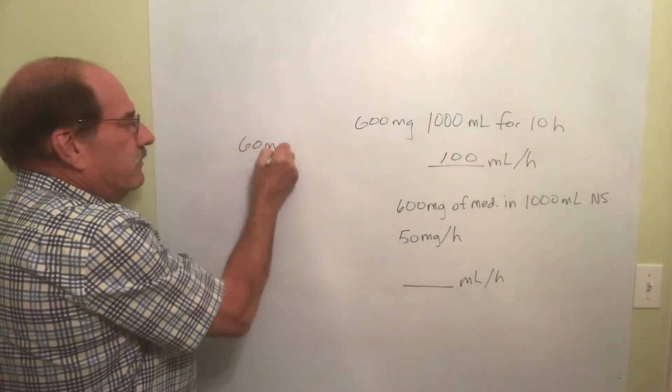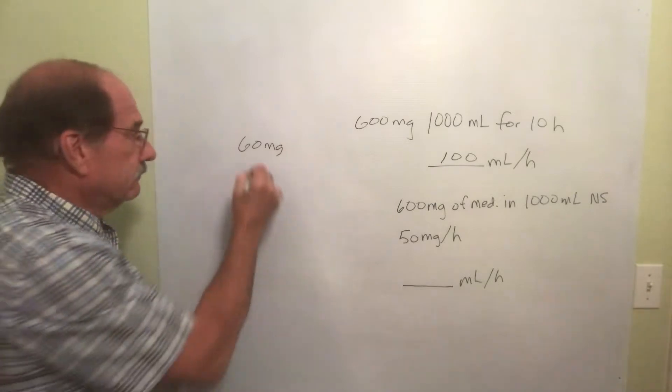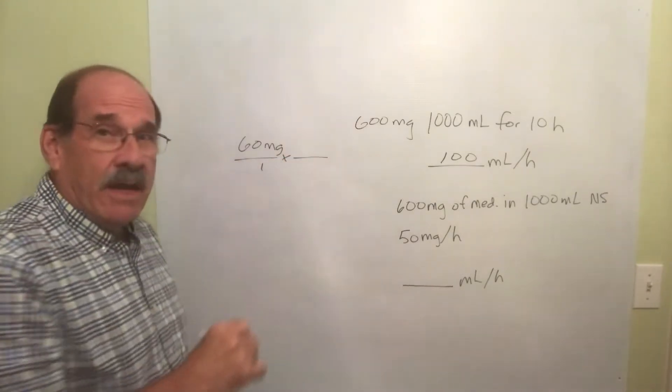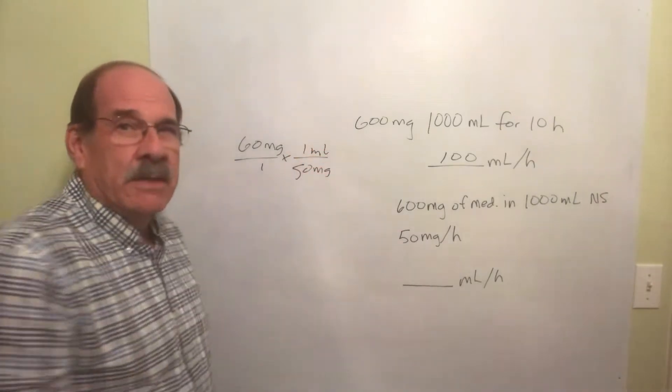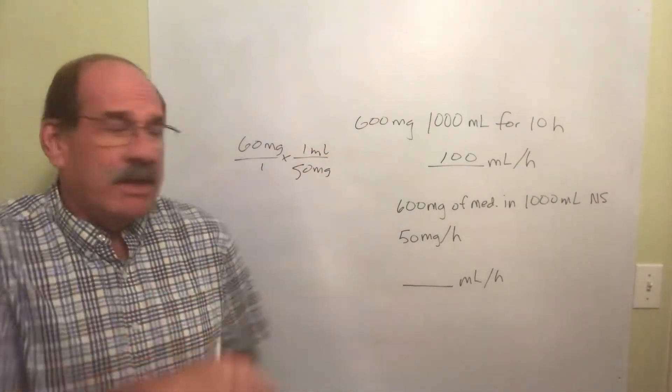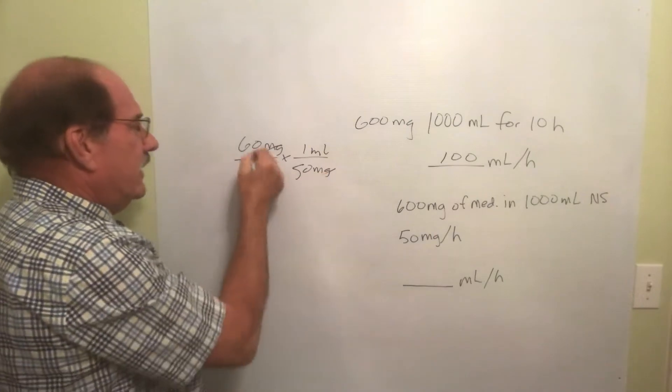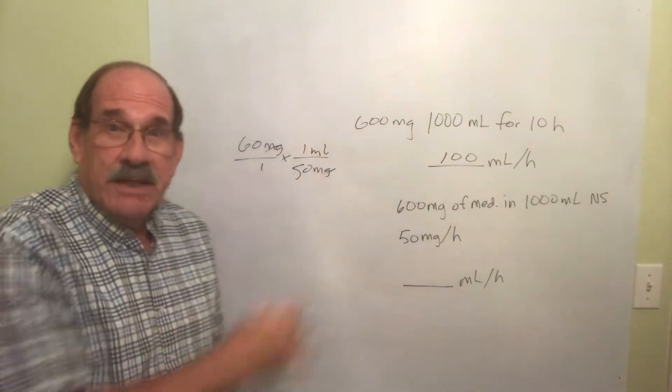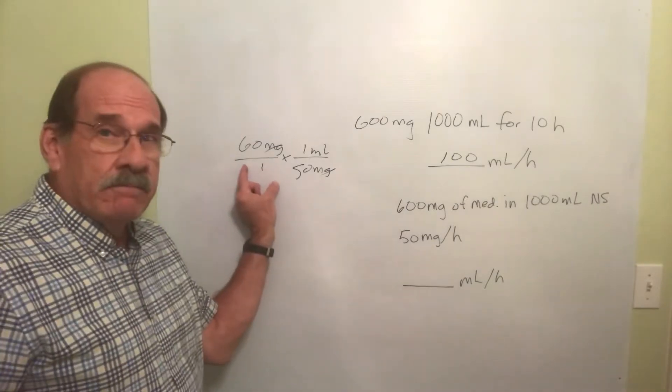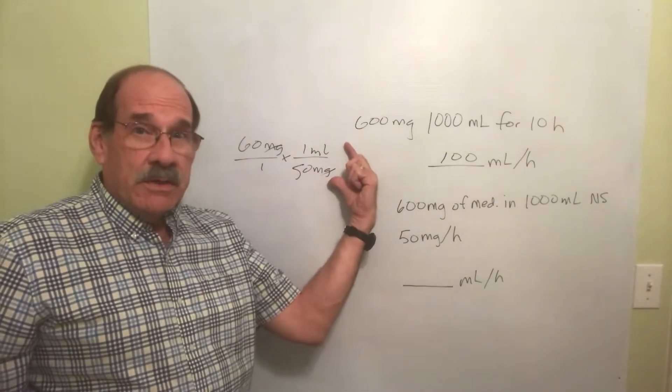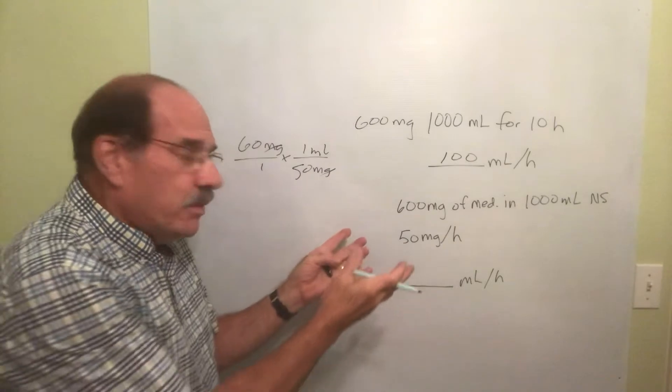But I've got 50 milligrams of medicine in every one milliliter of liquid I'm going to inject my patient. I just do this and I take 60 divided by 50 and there's my answer. So what we're doing is we're putting the order here and the dosage strength goes here.